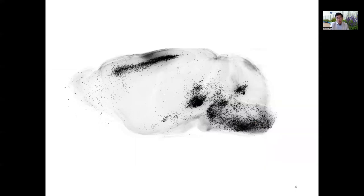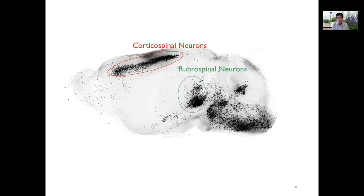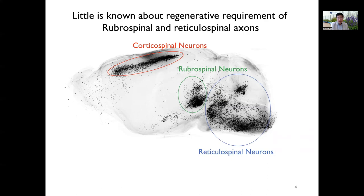However, several brain regions send their descending projections to the spinal cord, likely controlling different aspects of spinal function. Corticospinal neurons are only part of it. Other populations include rubrospinal neurons in the midbrain and reticulospinal neurons in the brainstem. Currently, very little is known about the regenerative requirements of rubrospinal and reticulospinal axons. In order to achieve functional recovery, it is important to find a way to promote the regeneration of all these different projections.